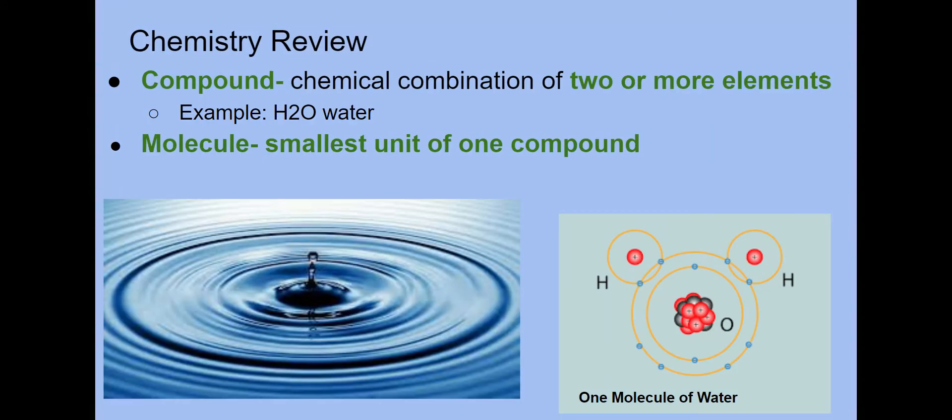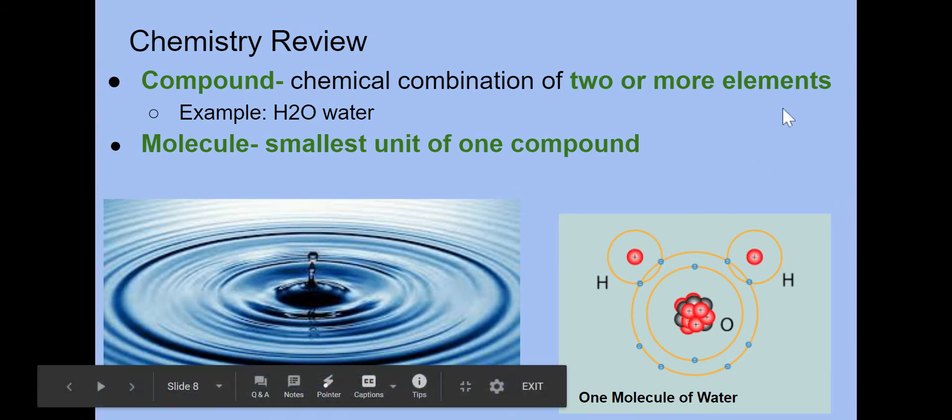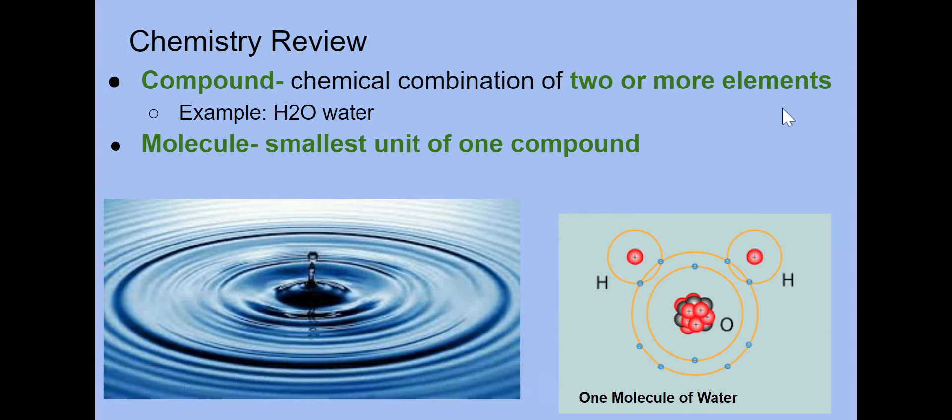Next, you can have compounds. Sometimes you combine two atoms to make a compound, or even more than two atoms. If you look at water here, you can see it's a combination of hydrogen, hydrogen, and oxygen. When you combine two or more elements—in this case two hydrogen atoms and one oxygen atom—you get a compound. A molecule is the smallest unit of one compound. In this image you see one molecule of water, and when you have a bunch of molecules of water, you see the compound water, shown with the water droplet.